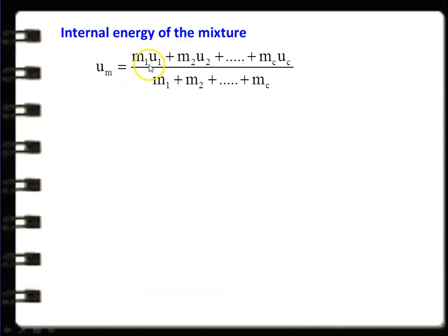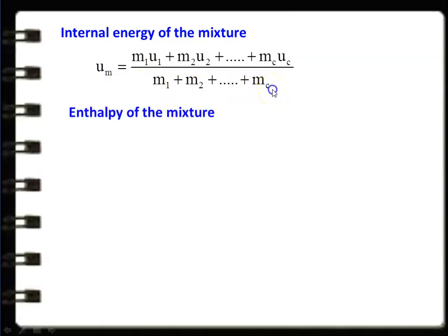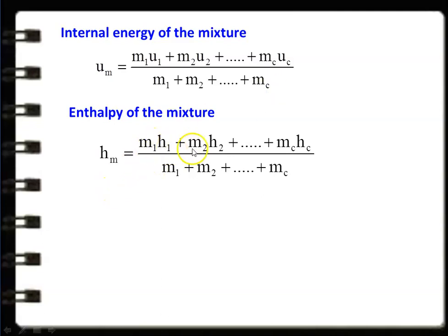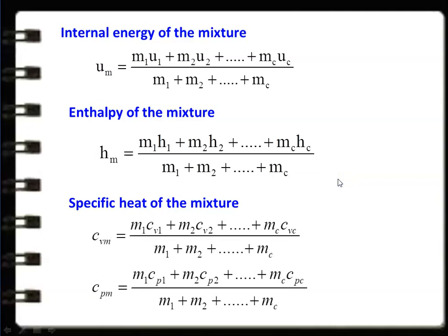The internal energy of the mixture Um = (M1·U1 + M2·U2 + ... + Mc·Uc) / total mass, where M1 is the mass and U1 is the internal energy of the first gas. Similarly, enthalpy of the mixture Hm = (M1·H1 + M2·H2 + ... + Mc·Hc) / total mass. For specific heat at constant volume: Cvm = (M1·Cv1 + M2·Cv2 + ... + Mc·Cvc) / total mass. For specific heat at constant pressure: Cpm = (M1·Cp1 + M2·Cp2 + ... + Mc·Cpc) / total mass.